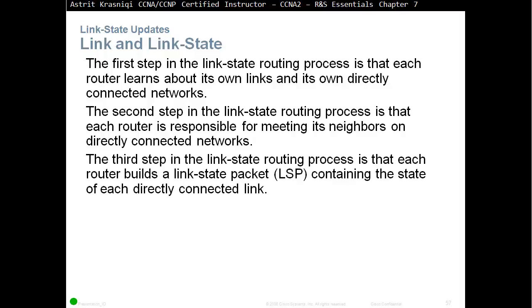The third step in the link state routing process is that each router builds a link state packet, or LSP, containing the state of each directly connected link. Each router will build its own LSPs — for example, it will describe a directly connected network on Fast Ethernet 0/0, including the type of network, how many neighbors it has on that link, the cost of that link, the IP address, and the subnet mask. It will give all this information to the neighbor.